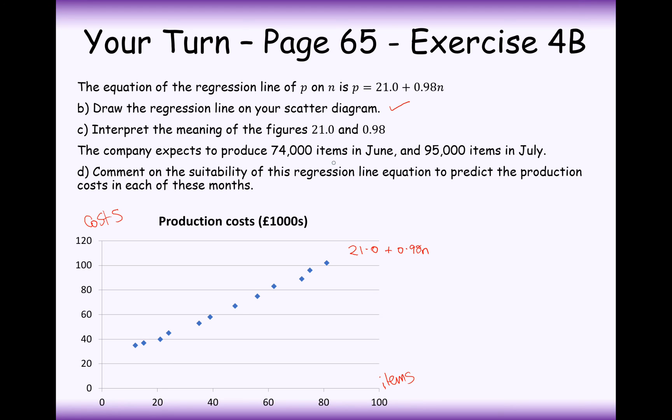The company expects to produce 74,000 items in June and 95,000 items in July. Comment on the suitability of the regression line to predict the production costs for these months. So for the 74,000, that's pretty much slap bang in the middle of our set of data here. 95,000 is some way outside, so this is going to be less reliable, and this is going to be more reliable. You can use the posh words here: interpolation if it's inside the region of values, and extrapolation if it's outside.